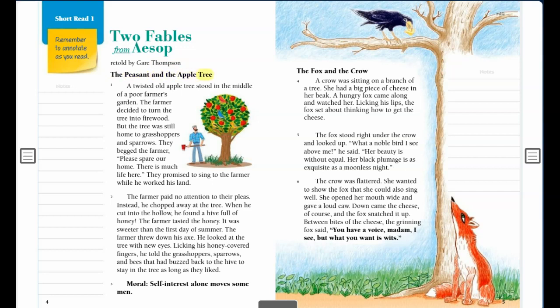The Peasant and the Apple Tree. A twisted old apple tree stood in the middle of a poor farmer's garden. The farmer decided to turn the tree into firewood. But the tree was still home to grasshoppers and sparrows. They begged the farmer, please spare our home, there is much life here. They promised to sing to the farmer while he worked his land.